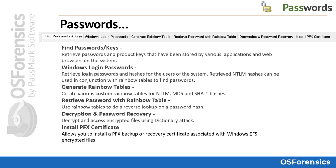The next tab is the Windows Login Passwords tab, which retrieves login passwords and any password hints stored in the SAM registry hive in the NT user hash of Windows user accounts. The following two tabs — Generate Rainbow Tables and Retrieve Passwords with Rainbow Table — allow the user to generate rainbow tables, which are pre-computed tables used for reversing cryptographic hash functions, and then use that table to crack specific hashes such as the NT or LM user hash. These attacks differ from the brute-force dictionary attacks available in the next tab.